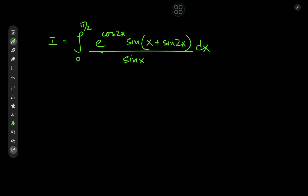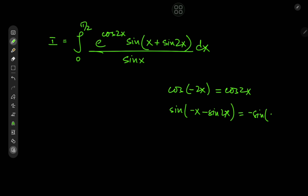By the way, if you check x to negative x for the integrand, you'll find we're integrating an even function of x. Cosine of negative 2x is cosine 2x, whereas sine of negative x minus sine 2x, the sine function being odd, gives you negative sine x plus sine 2x. But in the denominator we have sine of negative x, so the negative signs cancel. So we could integrate from negative to positive π/2 as well, and to get that result we just solve the target integral and multiply by 2.